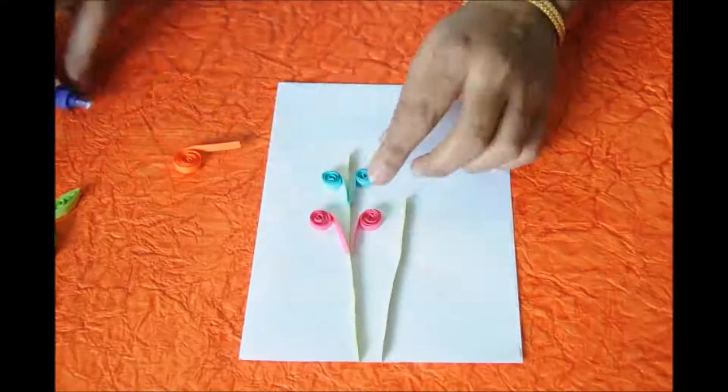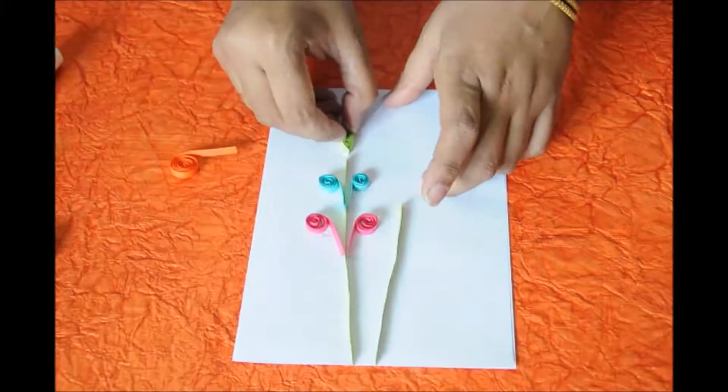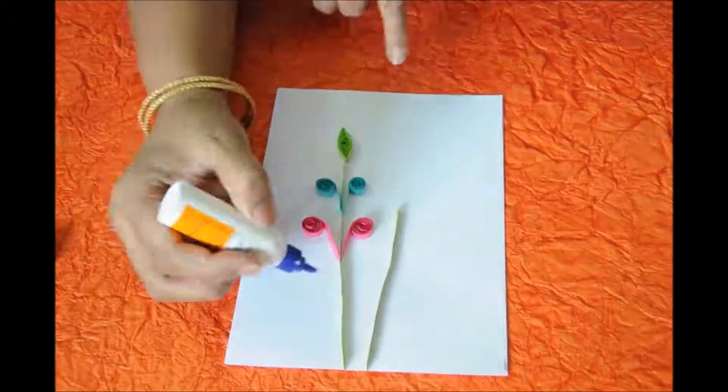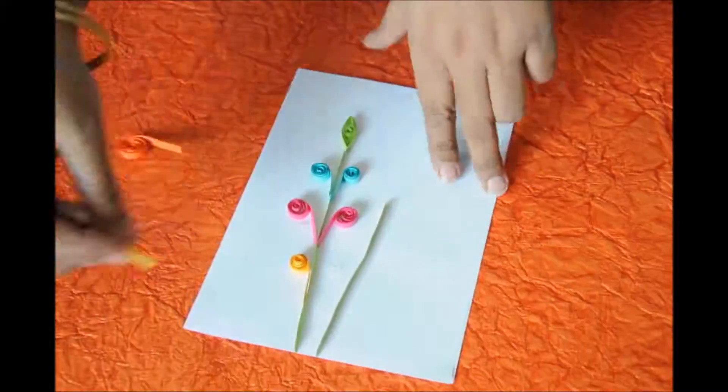For one, I'm going to put the leaves on the top and for the others, I'm just going to put the leaves on either sides of the stem. For this, I'm just going to put on the top. Keep going in the pattern that you want.